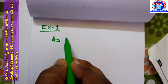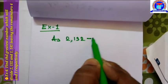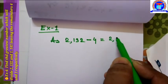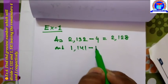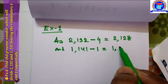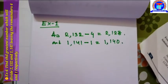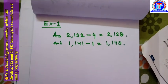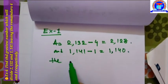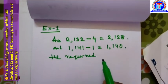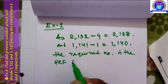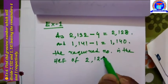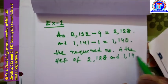The solution is as follows. 2132 minus 4 is equal to 2128, and 1141 minus 1 is equal to 1140. The required number is the HCF of 2128 and 1140. We find the HCF by the division method.